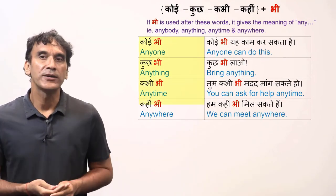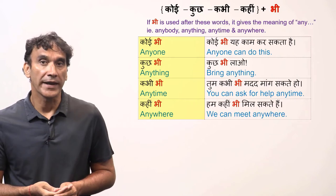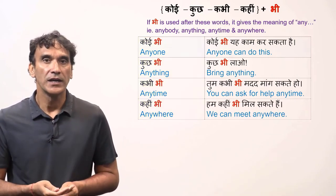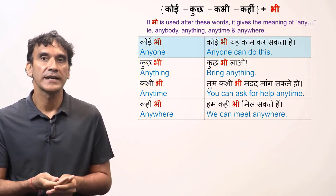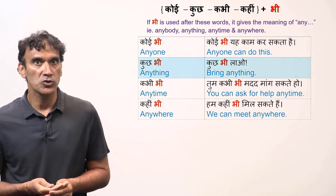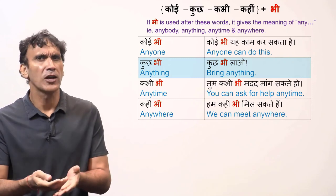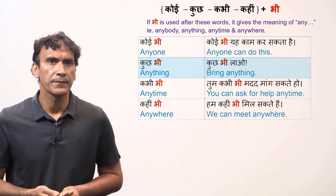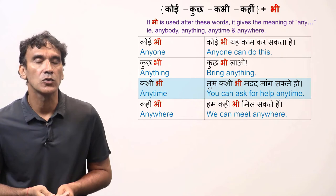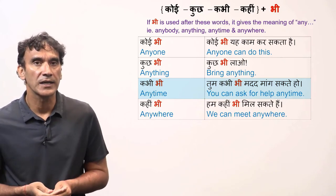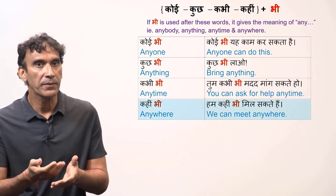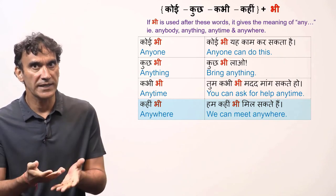If you add bhi to these words, it changes the meaning to any — anyone, anything, anytime, anywhere. Koi bhi means anyone: koi bhi ye kaam kar sakta hai — Anyone can do this. Kuch bhi means anything: kuch bhi lao — Bring anything. Kabhi bhi means anytime: tum kabhi bhi madad maang sakte ho — You can ask for help anytime. And finally, kahin bhi means anywhere: hum kahin bhi mil sakte hain — We can meet anywhere.